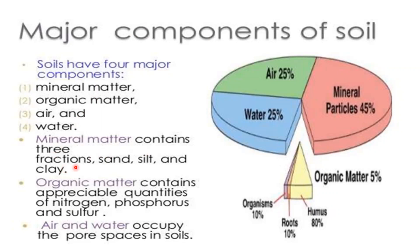Mineral matter contains three fractions: sand, silt and clay. Organic matter contains appreciable quantities of nitrogen, phosphorus and sulfur. Air and water occupy the pore spaces in soil. The mineral particles occupy the major portion of the soil — around 45%. Air occupies 25% and water 25%, and the remaining 5% is occupied by organisms, roots and humus.